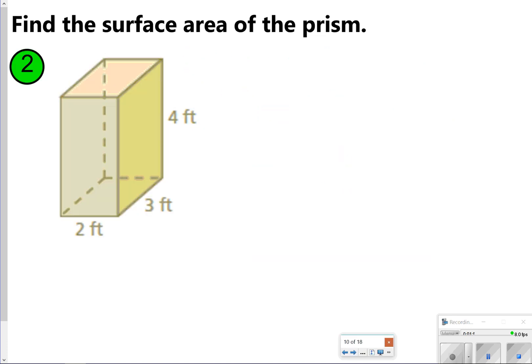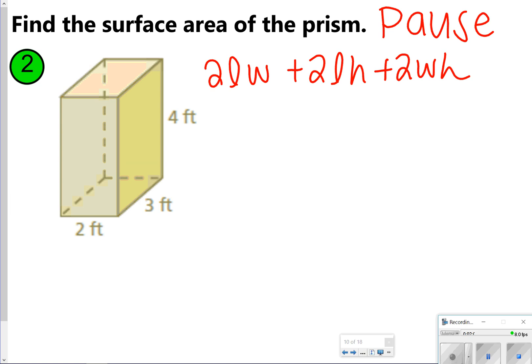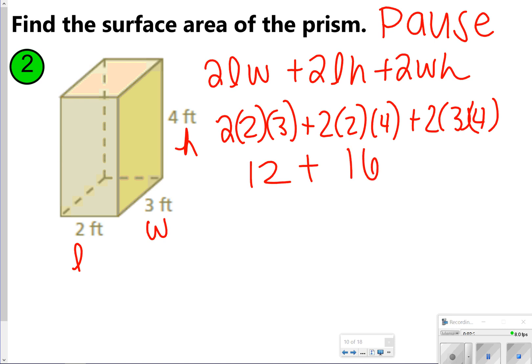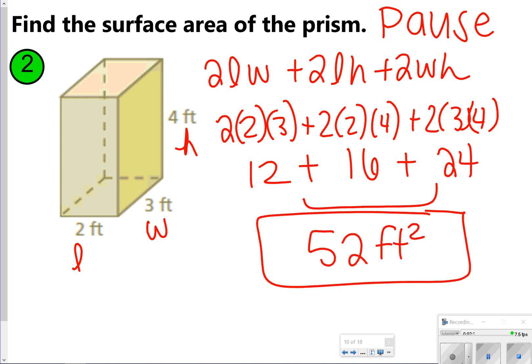So you're going to try this next one on your own. Let's go ahead and pause the video so you can try number 2. And once you're done, click play to check your work. All right, I've gone ahead and written out my formula. I'm going to say 2 is L, 3 is W, and 4 is H. So that means I'll do 2 times 2 times 3 plus 2 times 2 times 4 plus 2 times 3 times 4. 2 times 2 times 3 is 12, 2 times 2 times 4 is 16, and 2 times 3 times 4 is 24. Adding these all together is going to give me 52 feet squared. How did you do?